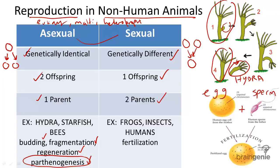When these sex cells merge together, either inside or outside the body, this is called fertilization. In this process, genetic information is exchanged, and one genetically different offspring is produced. This zygote is produced from genetically different cells.